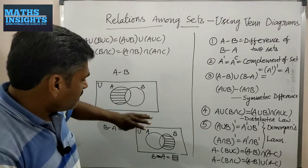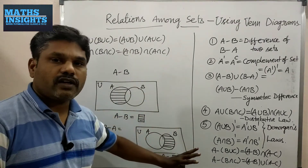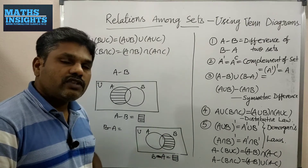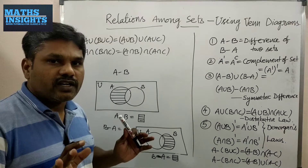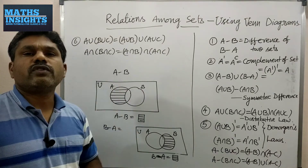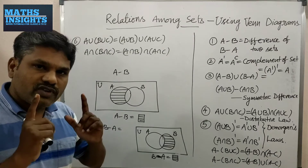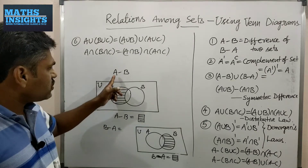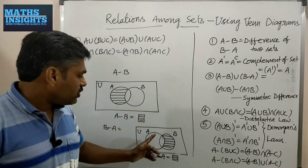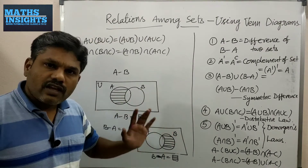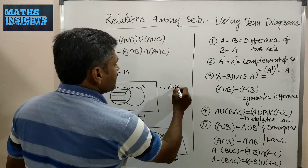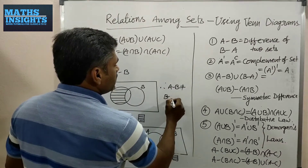B minus A is shown with horizontal lines. Note these are separate diagrams. You may also represent this area with vertical lines — that will not make any difference. From these two diagrams you will observe that the area showing A minus B is different from the area showing B minus A. Therefore we conclude that A minus B is not equal to B minus A.